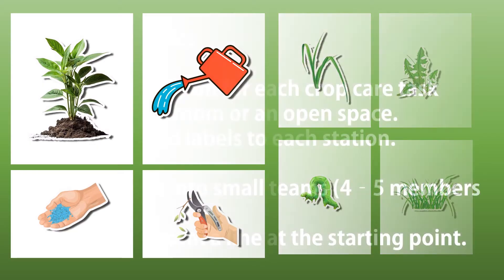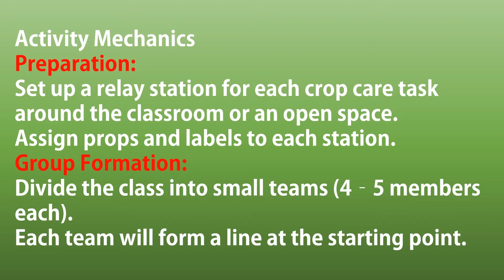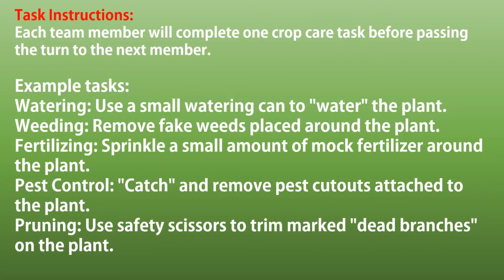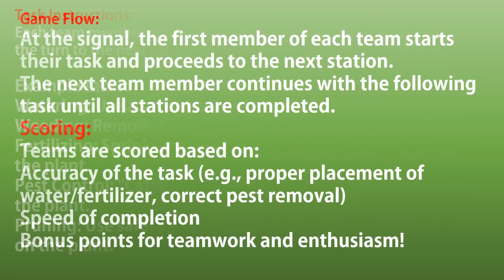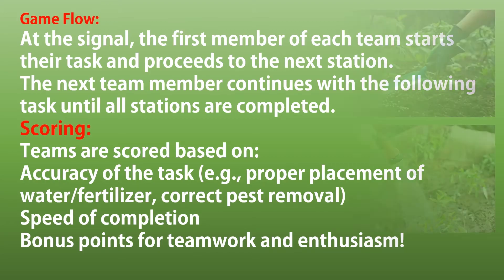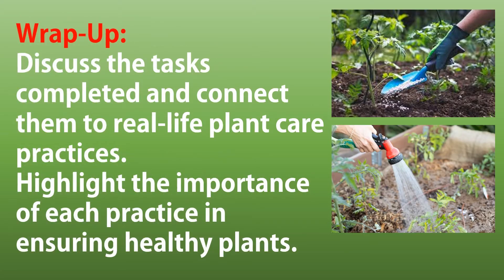Set up a relay station for each crop care task around the classroom or an open space. Assign props and labels to each station. Divide the class into small teams of 4–5 members each. Each team forms a line at the starting point. At the signal, the first member starts their task and proceeds to the next station, continuing until all stations are completed. Afterwards, discuss the tasks and connect them to real-life plant care practices, highlighting the importance of each.